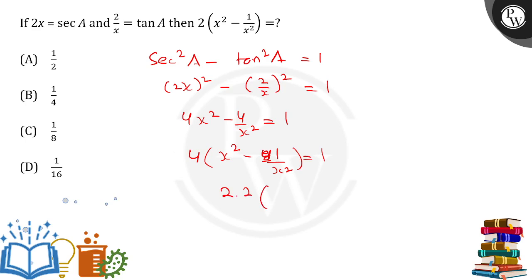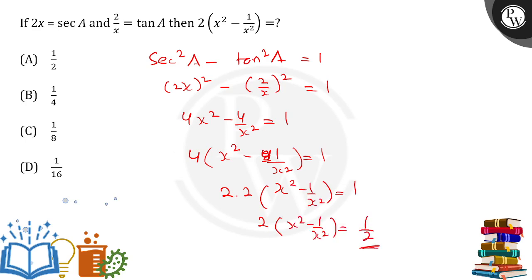So 2 into x squared minus 1 upon x squared equals 1. From here, x squared minus 1 upon x squared will become 1 upon 2. The answer will be 1 upon 2.